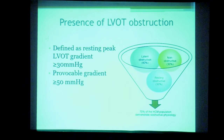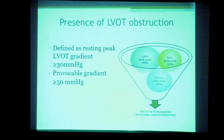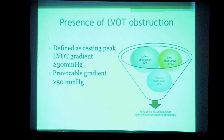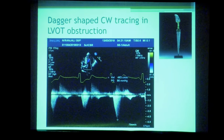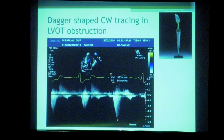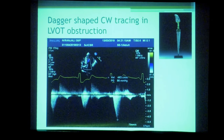Regarding LVOT obstruction: truly non-obstructive HCM accounts for only about one-third of patients. Approximately 30% have resting LVOT obstruction visible on resting echo, and another 40% have latent obstruction that is provocable. A significant resting gradient is defined as a peak gradient >30 mmHg, and a provocable gradient as >50 mmHg. On continuous wave Doppler, the pattern is a characteristic dagger-shaped appearance, as opposed to the parabolic or ellipsoid shape seen in fixed obstruction, indicating dynamic LVOT obstruction.